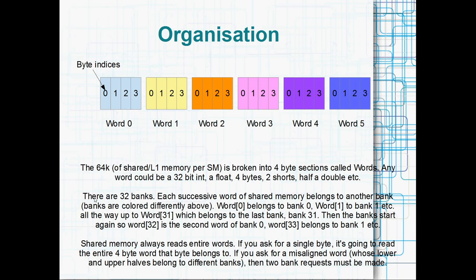There are 32 banks in shared memory on an NVIDIA GPU. Each successive word — that's these four-byte regions — of shared memory belongs to another bank. Word zero belongs to bank zero, word one belongs to bank one, word two belongs to bank two, all the way up to word 31. And word 32 of shared memory belongs to bank zero again. So there's 32 banks, and each consecutive word belongs to another bank — by the time you get to word 32, you're back to bank zero again.